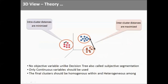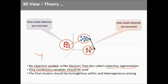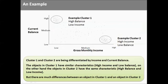Here is one more demonstration. We have various observations where the distance between observations within a cluster is very small, but the distance between clusters — inter-cluster distance — is very high. This is the core concept of cluster analysis. There is no objective variable, no Y variable, unlike decision trees or logistic regression, which are supervised learning techniques. We can use only continuous variables to perform cluster analysis, and the final clusters should be homogeneous within and heterogeneous among.